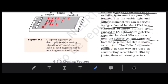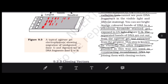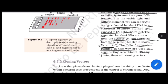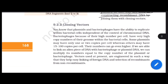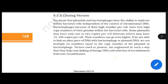The DNA is extracted from the gel piece — this step is called elution. The DNA fragments are then used to construct recombinant DNA and are later joined with the cloning vector.